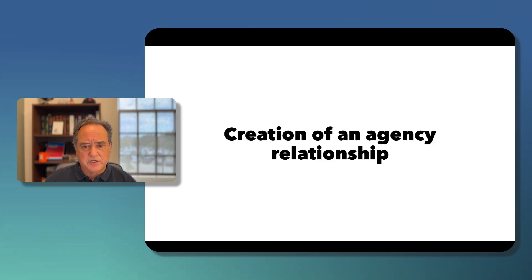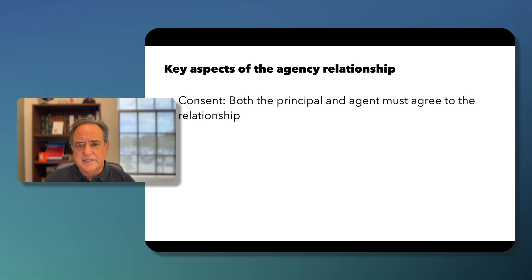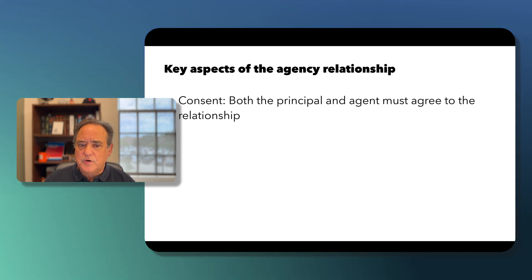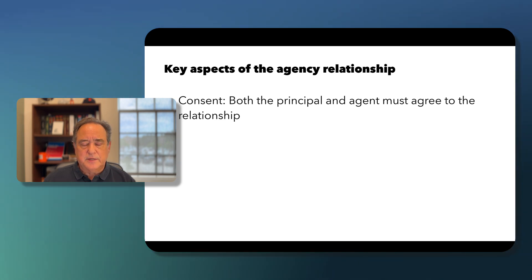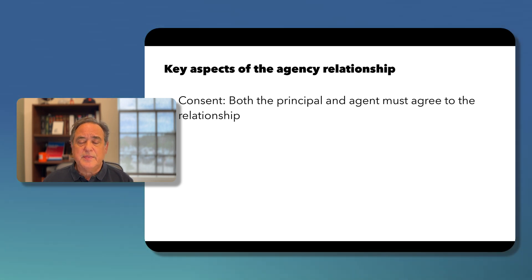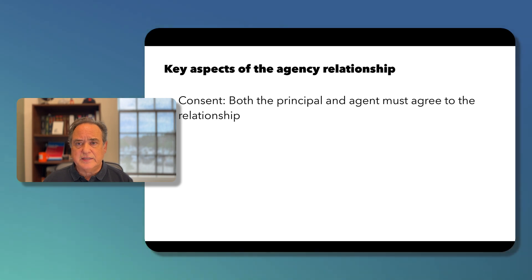Let's talk about the creation of the agency relationship and its key aspects. Starting with consent: in order for an agent-principal relationship to exist, both the principal and the agent must agree to the relationship. There must be an agreement that the agent will act on behalf of the principal and that the principal will allow the agent to act on its behalf.